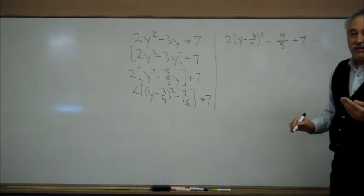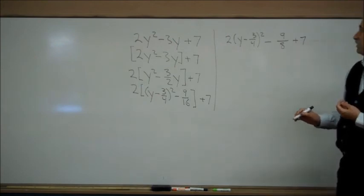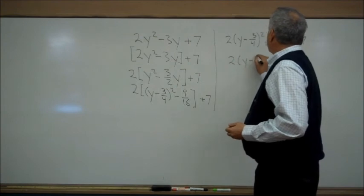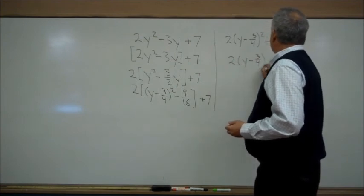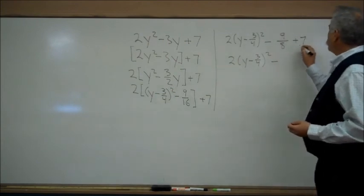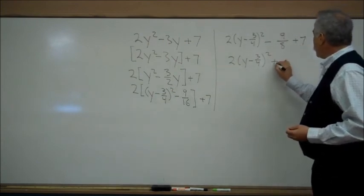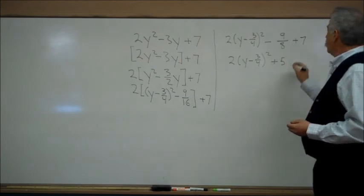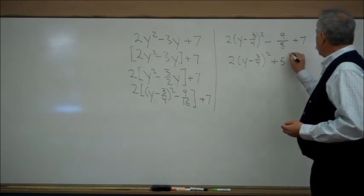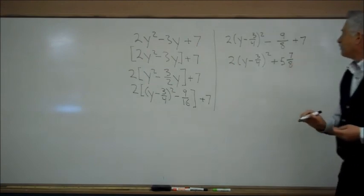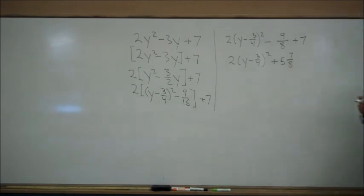The last step of the cleanup is to combine like terms. So we have 2(y - 3/4)² minus 1 and 1 eighths, plus 7, gives us a plus 5 and 7 eighths. And we have done completing the square.